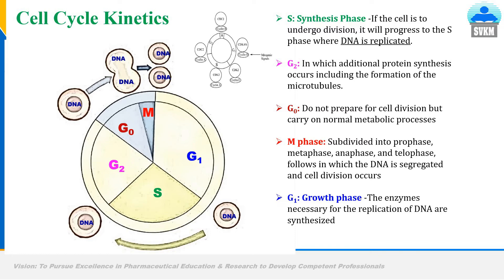After G2 phase, the cell enters into the G0 phase. In G0 phase, the cell does not prepare for cell division but only carries out normal metabolic processes. Later on, after G0 phase, the cell moves to the M phase, which is subdivided into prophase, metaphase, anaphase, and telophase.